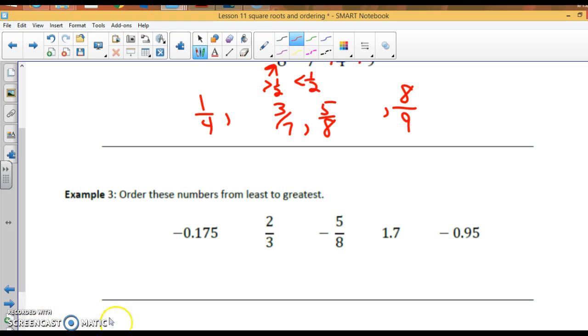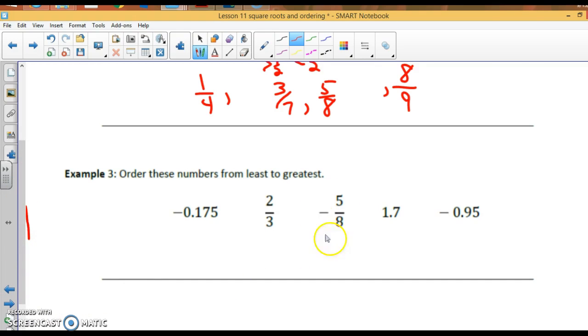Okay, order these numbers from least to greatest. Alright. I think we're going to change to decimals. Especially if it's negative 5/8. If I do negative 5/8, I will get negative .625. So, which number is farthest left on the number line? It would be negative .9500. Then, negative 5/8. Then, negative .175. That's my negatives. Now, these two, 2/3 and 1.7. 2/3 is less than 1. So, that goes next. And then, 1 and 7/10.